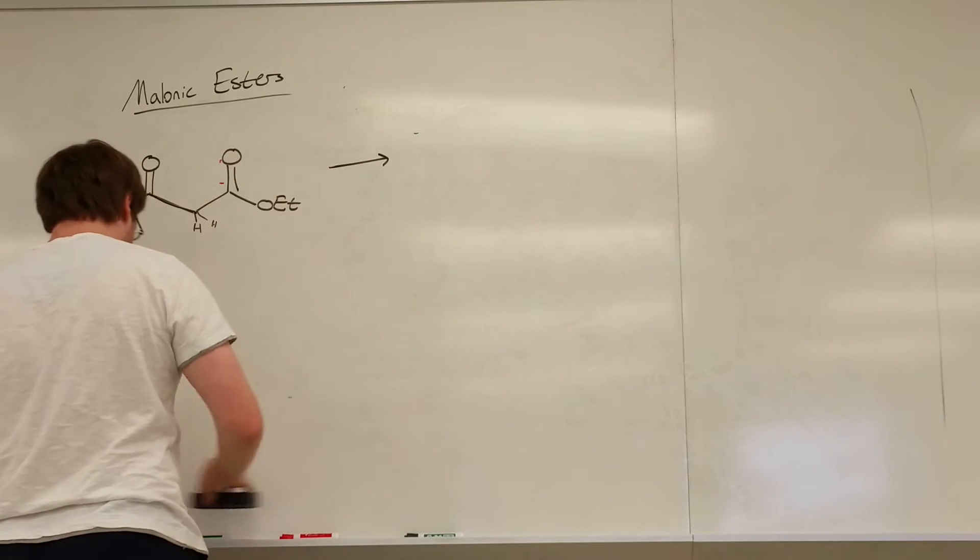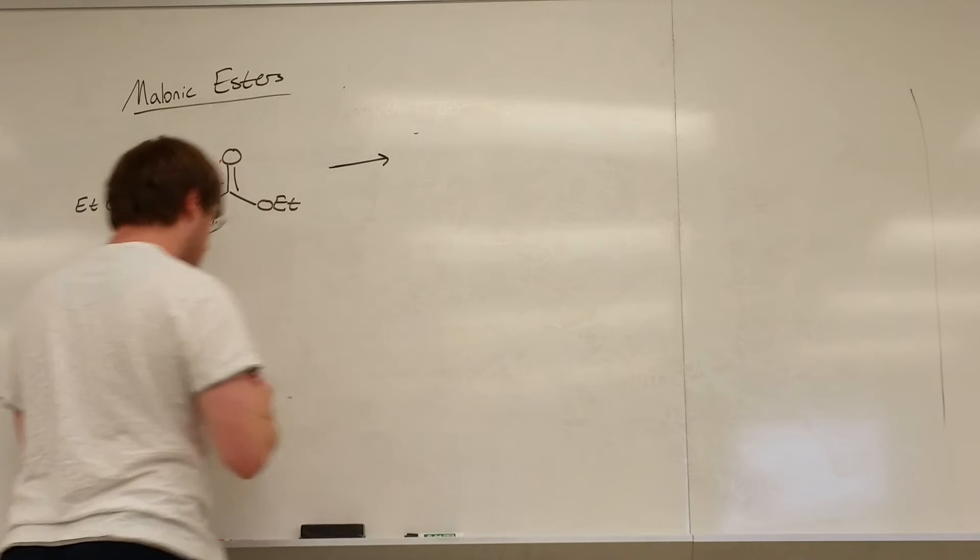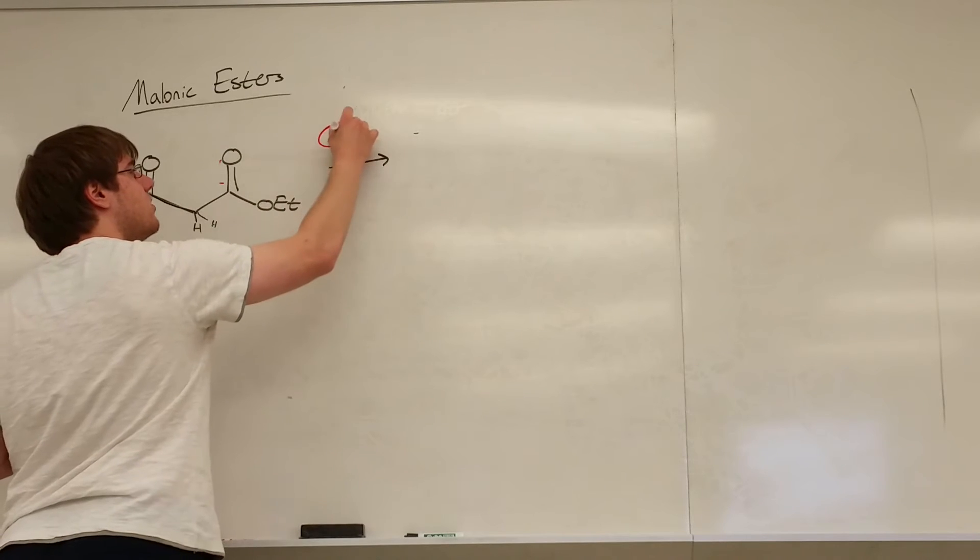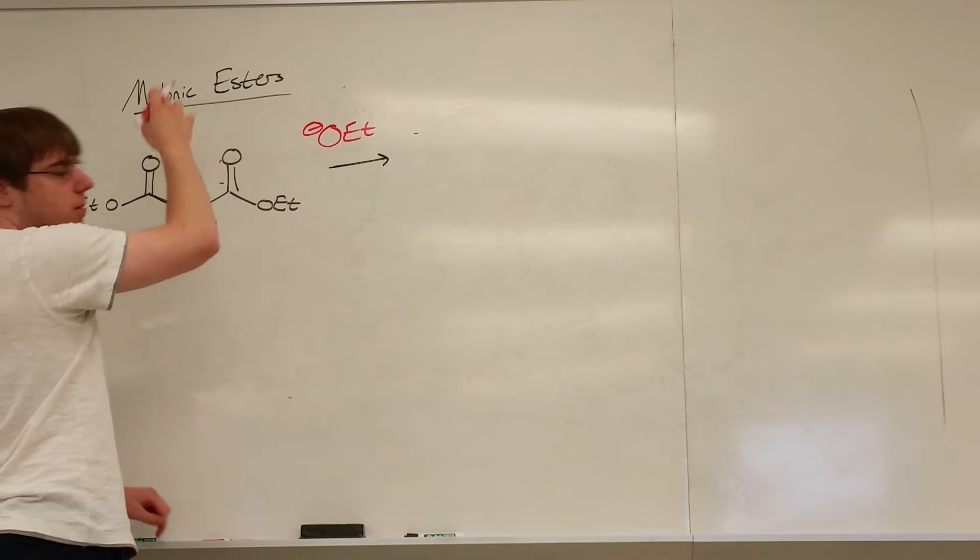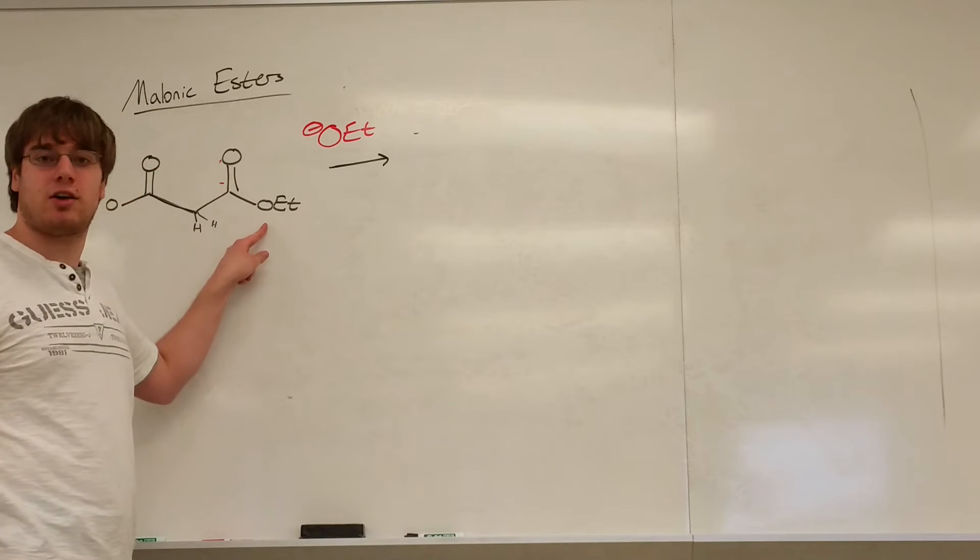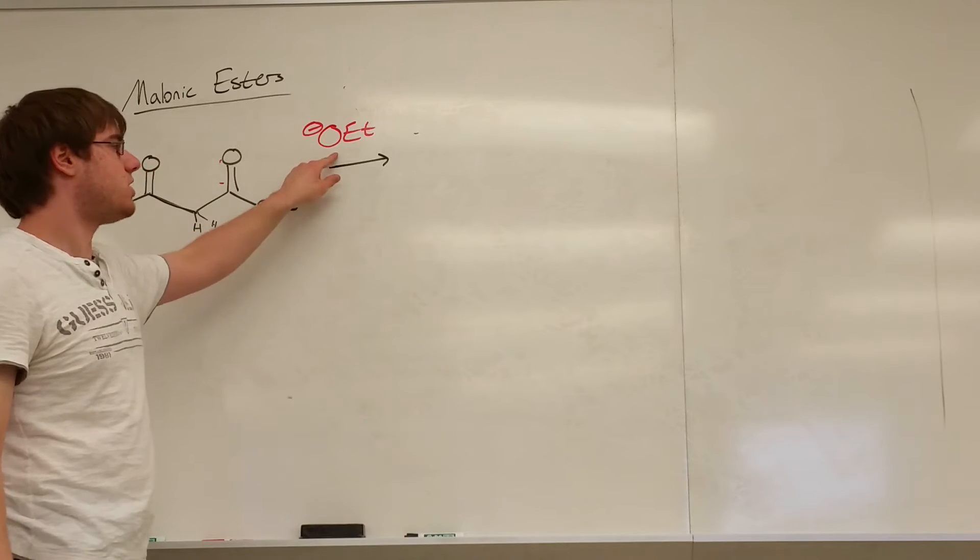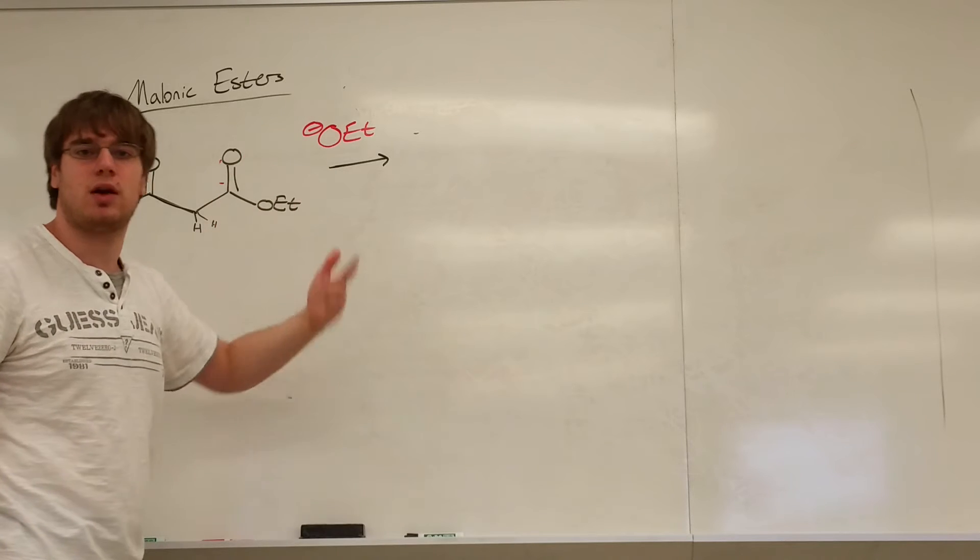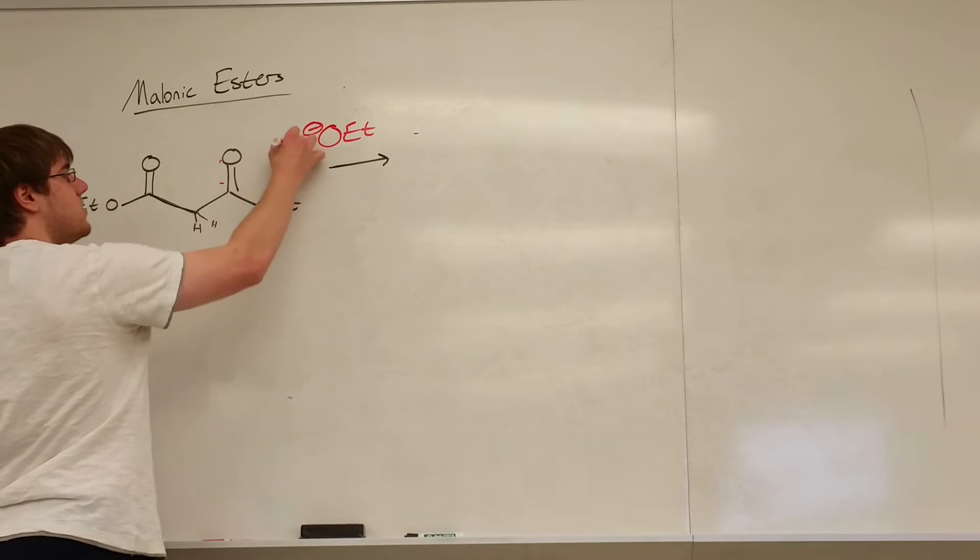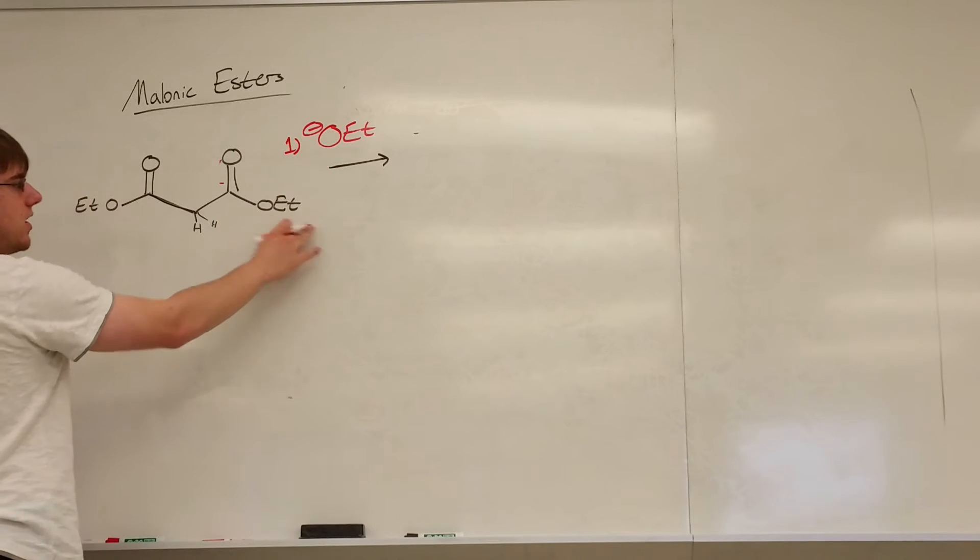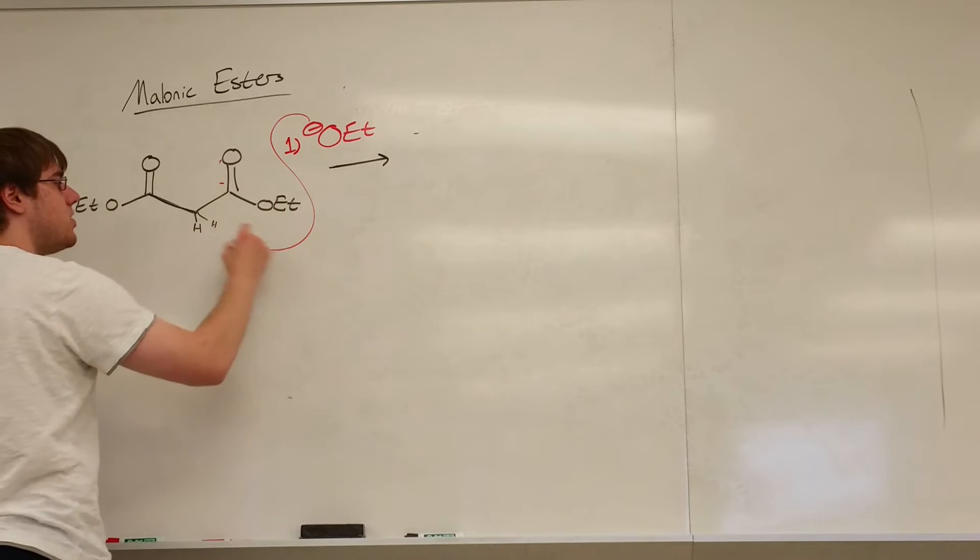Because if you use a base that matches your OR group, even if this OET- does attack this carbonyl, when this swings up and swings back down, the only thing it could ever kick out is an OET. So if you're just adding another OET, you're kicking out whatever you've added. So that's step one. Use a base. And what that base will do is, since it can't kick out the OET, eventually it's going to grab this proton.